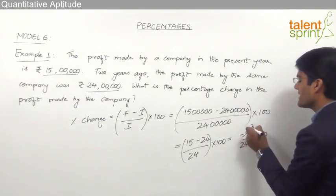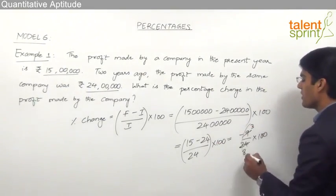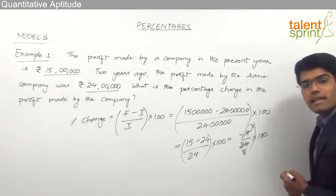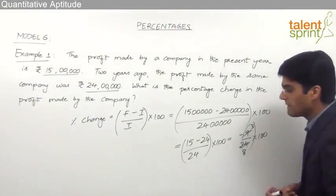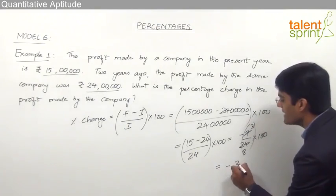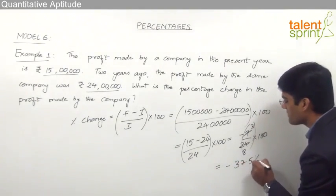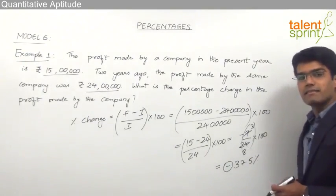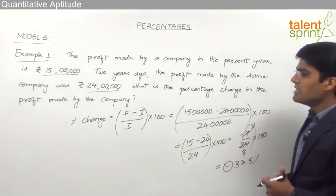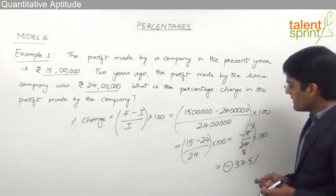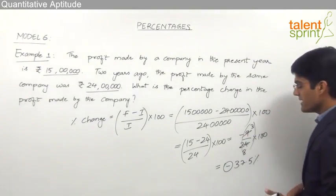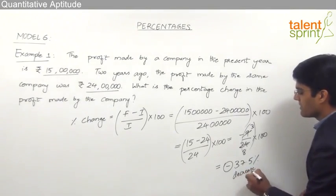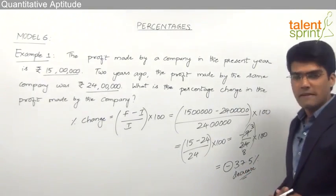This simplifies to 3 by 8, and from the knowledge of fractions in terms of percentages, we know that 3 by 8 equals 37.5 percent. So the answer here is minus 37.5 percent. This minus sign indicates that the profit has decreased. So we can say that the percentage change in the profit made by the company is a 37.5 percent decrease.